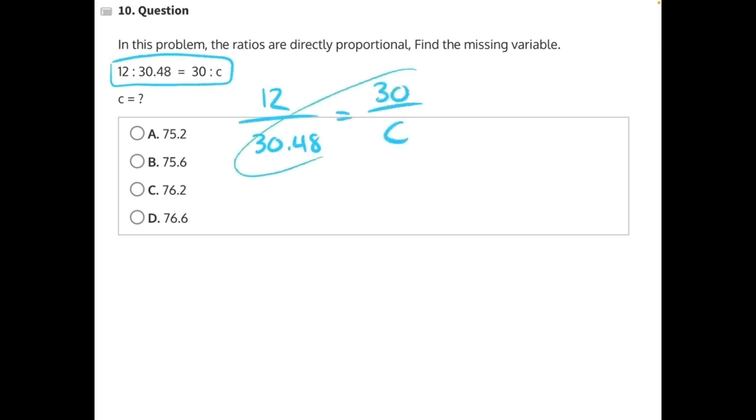Now we can see that we need to cross multiply here, 30 times 30.48. That's equal to this cross multiplication of 12 times c.